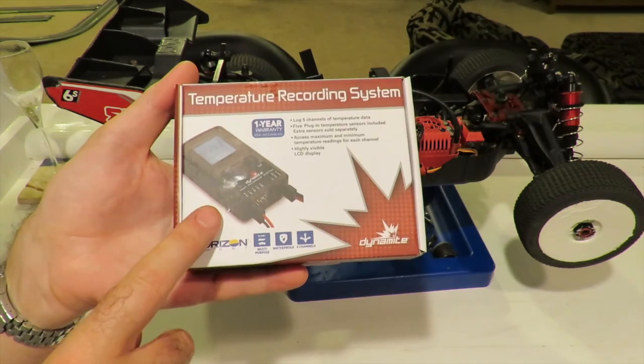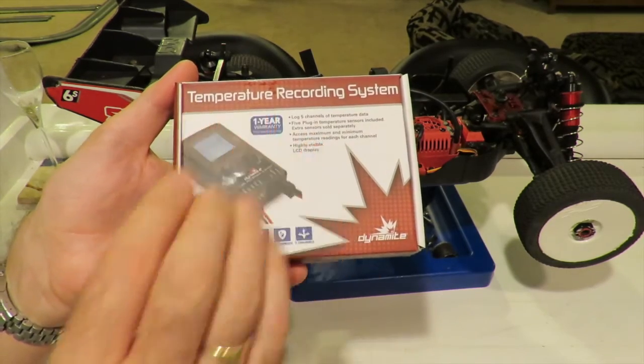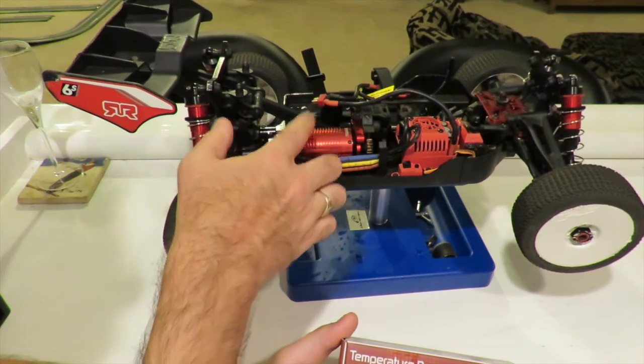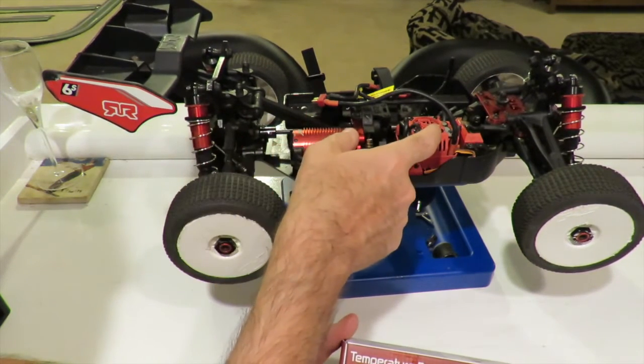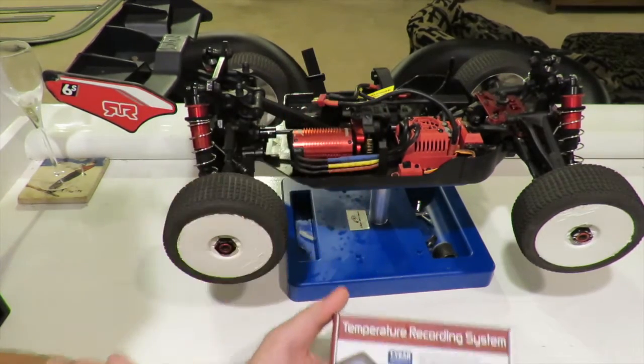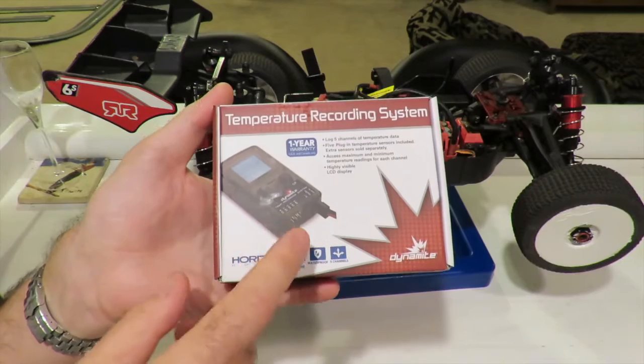It's a temperature recording system that covers five different channels. This is my Armour Typhon. Brushless motor on here, you can put temperature sensor on that, temperature sensor on the ESC, temperature sensor on a couple of battery packs, etc. Just to see how hot your car is getting.